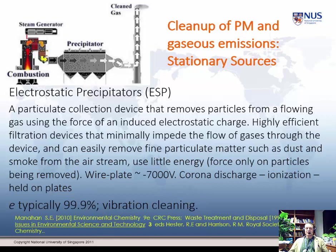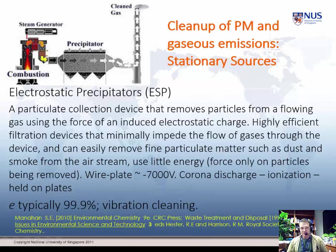We'll start with stationary sources and electrostatic precipitators. Here we have a little schematic diagram. The emission stream — the waste stream, which in this case is gaseous with particles — the precipitator removes the particles from the stream so you have many fewer particles. We've just been thinking about the health impacts of particulates, particularly small particulates. To remove them is a very, very good idea.